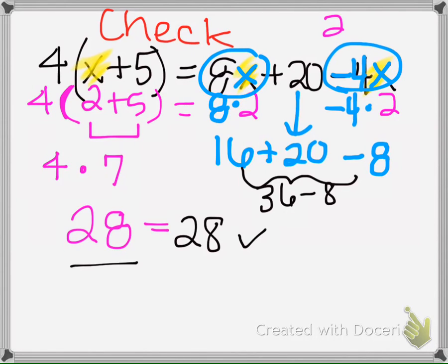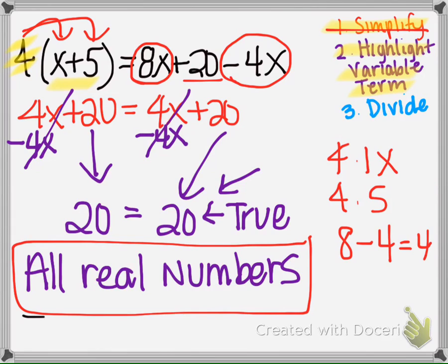And we get the same thing on both sides, so we know that the number 2 works. And I randomly picked that number, so that's what this means, that any number can go back in for x and make the equation true. Thank you.